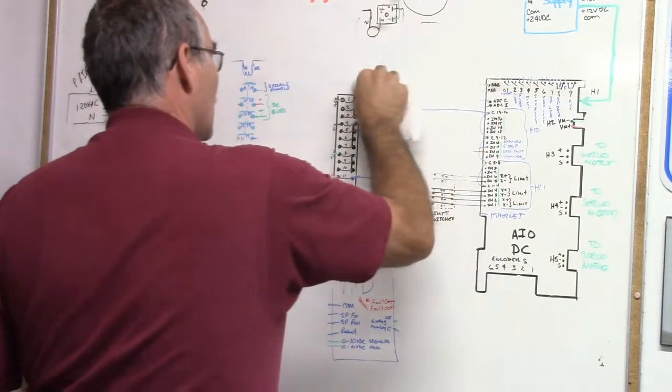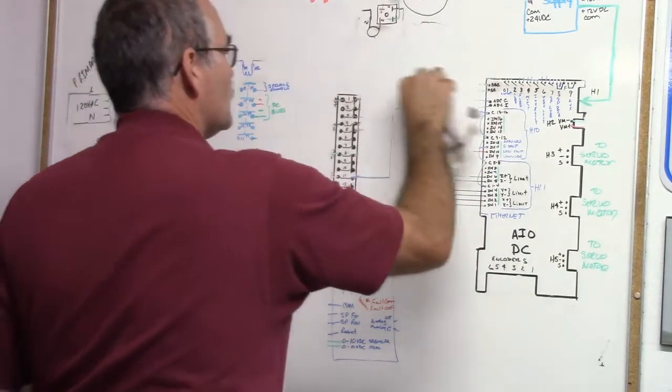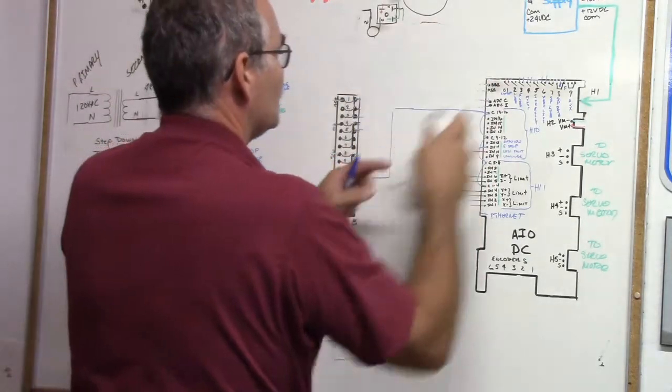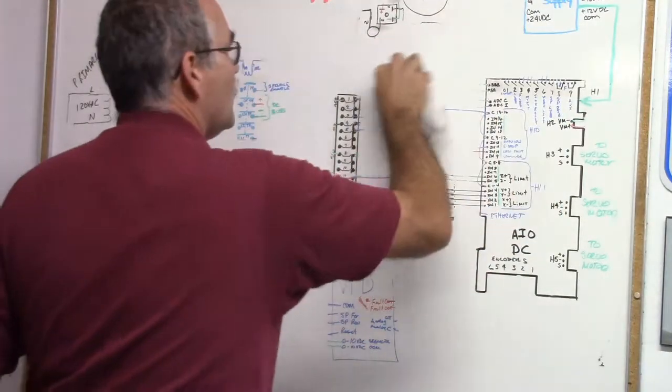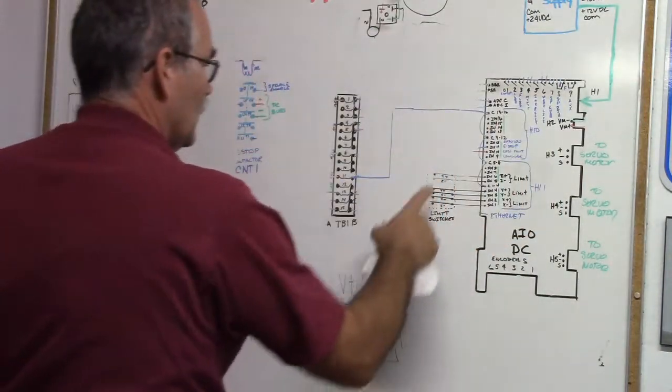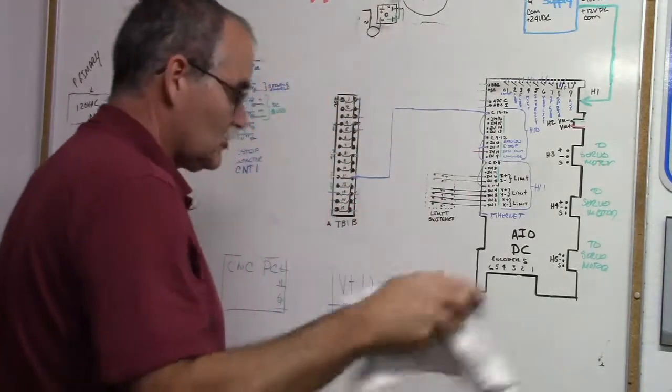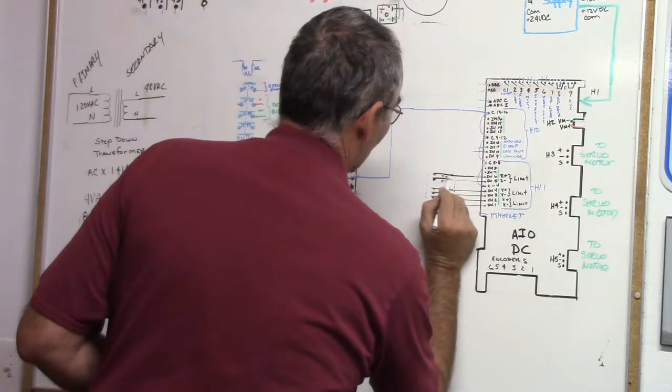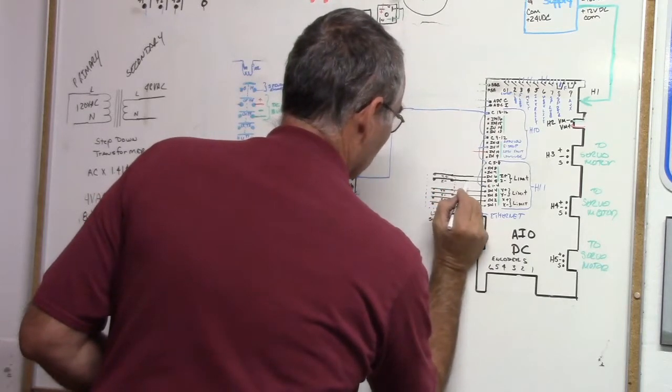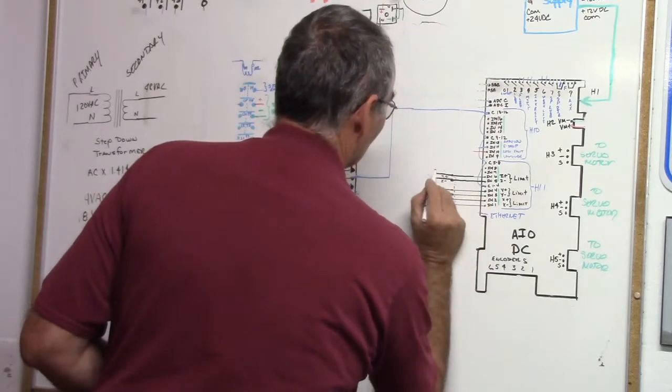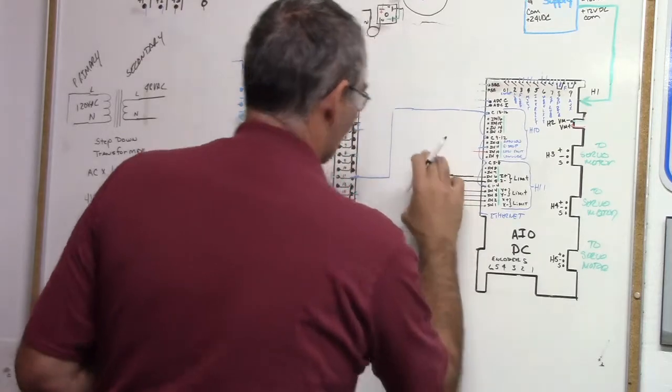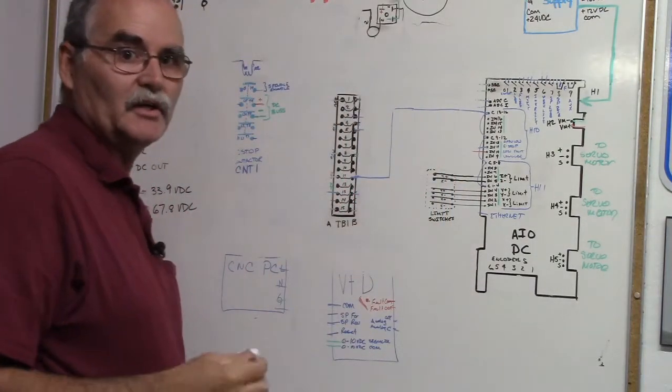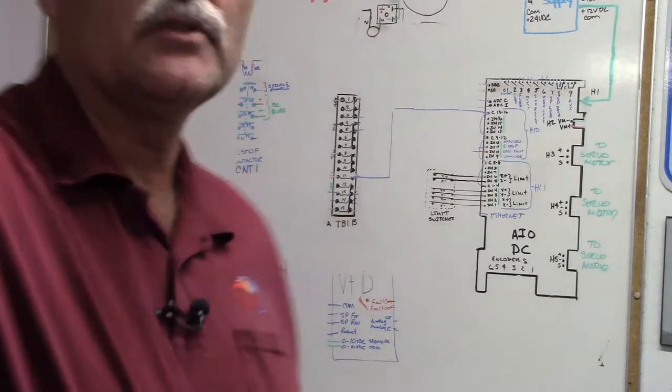That's it for the work light. The last thing I believe we need to touch on is our limit switches, which is one of the really easy things to wire up. Here are limit switches. I've already got them drawn on here. Limit switches should be most certainly normally closed. I'll draw a box around it saying these are limit switches - they're on your machine somewhere.